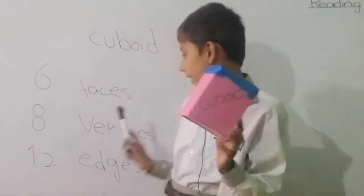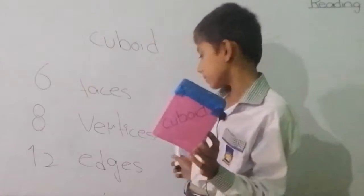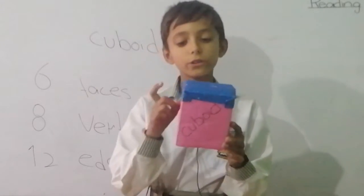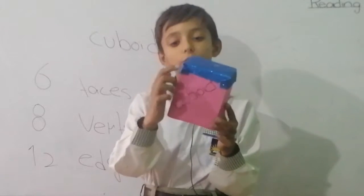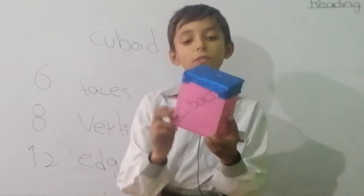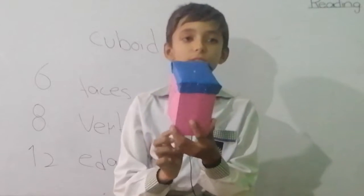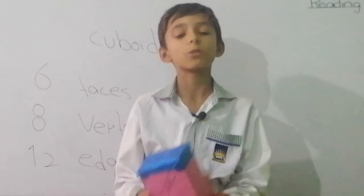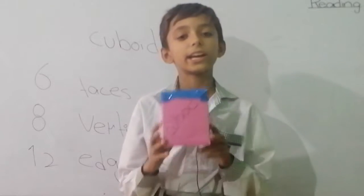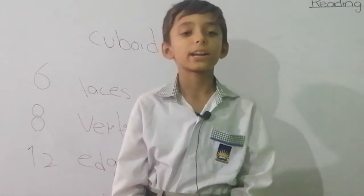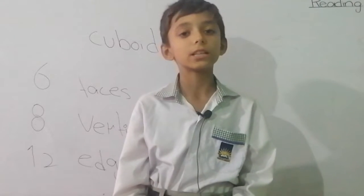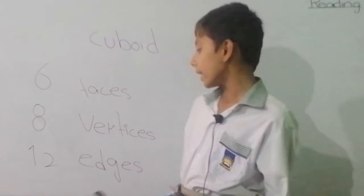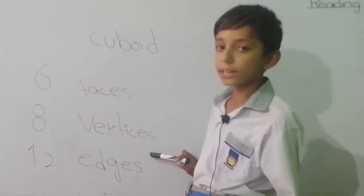I will tell you about cuboid vertices. Cuboid has 8 vertices. Now I will show you: 1, 2, 3, 4, 5, 6, 7, and 8. Cuboid has 8 vertices.